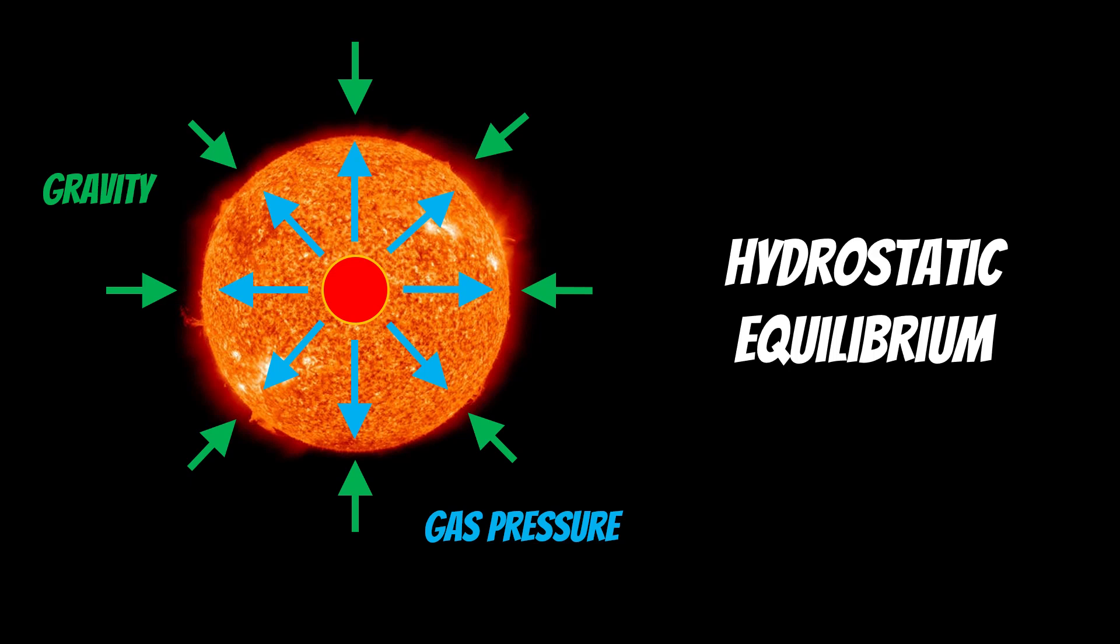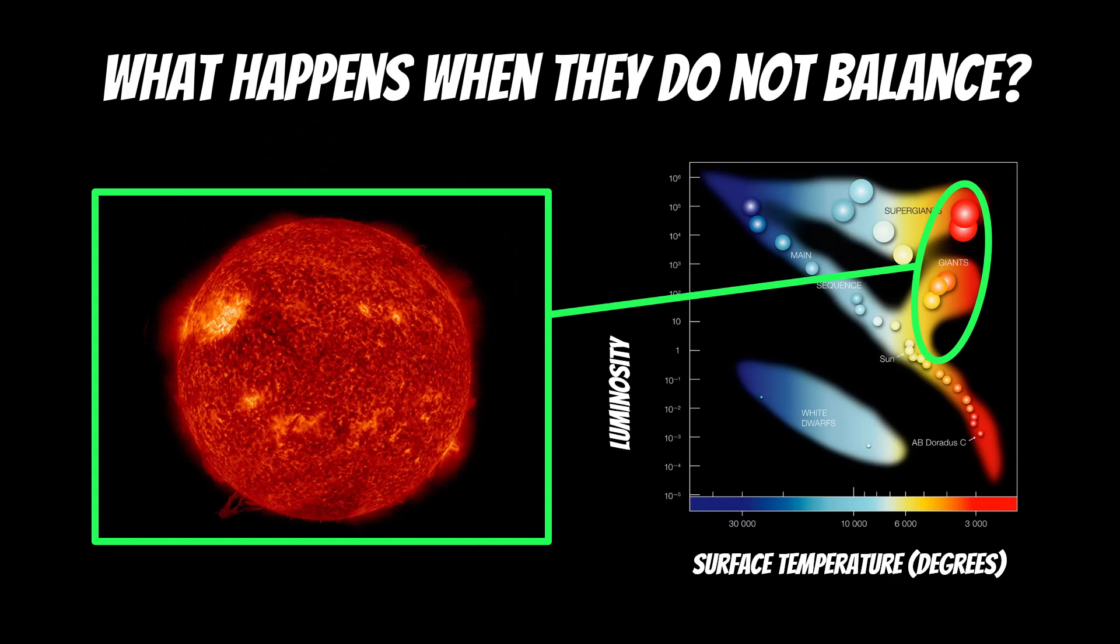And this is what's happening on the main sequence for all stars. They're basically balanced. However, what happens when they no longer balance?